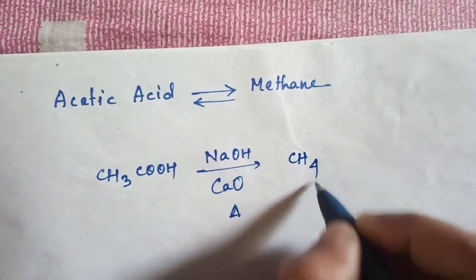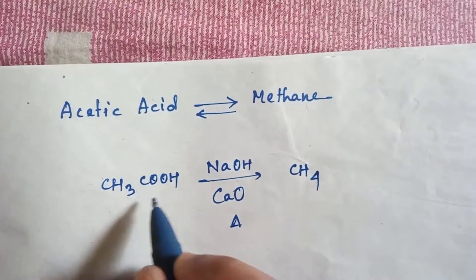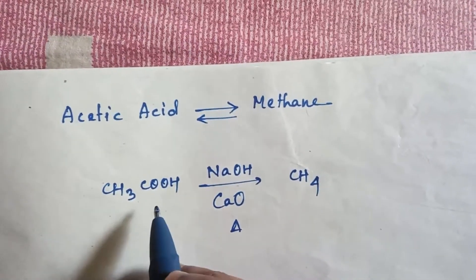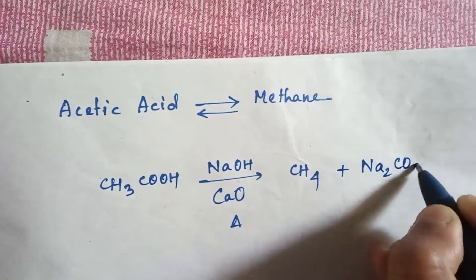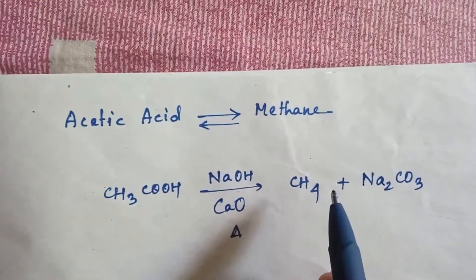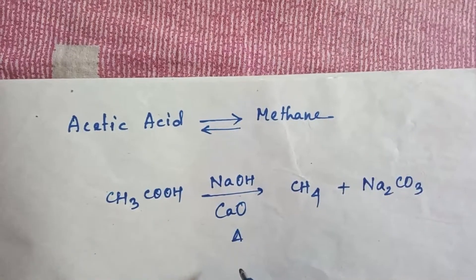If you add soda lime and heat, then you will easily get CH4, methane. The carbon dioxide part will be removed from this compound and the side product is sodium carbonate. So from acetic acid to methane, you are getting this by this reagent: soda lime and heat.